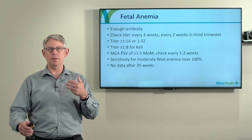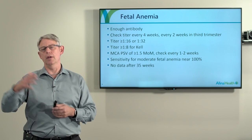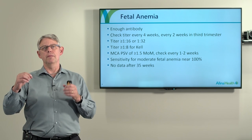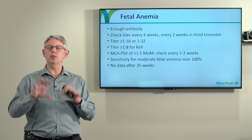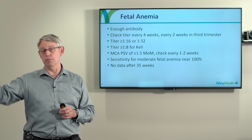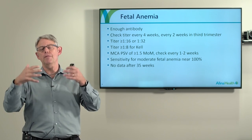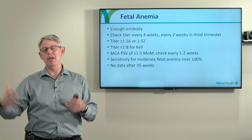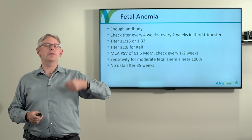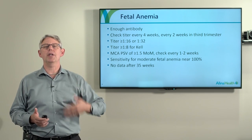There are two methods for determining titer: a tube method and a gel method. The gel method is perhaps more reproducible between labs but gives a higher titer — maybe 1 to 2 dilutions higher, sometimes more. So if you're checking titers, you have to make sure they go to the same lab using the same method in order to have consistent results. Titers are checked every month up to about the third trimester and every couple of weeks after that.